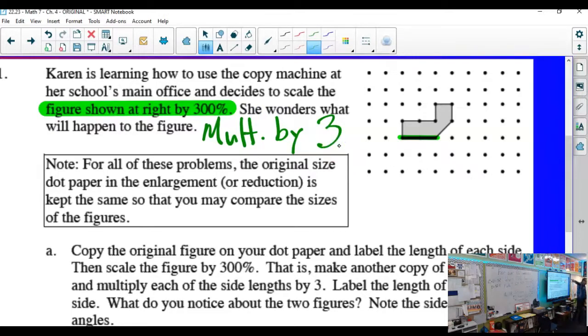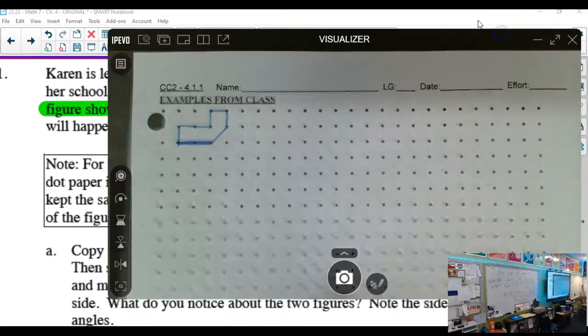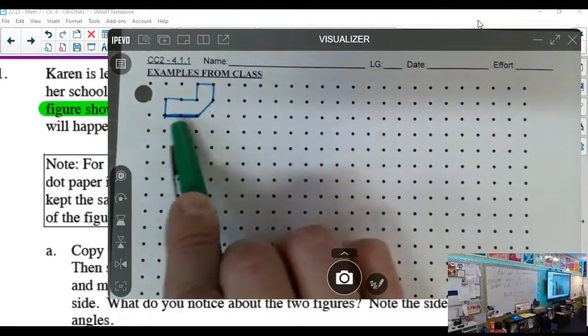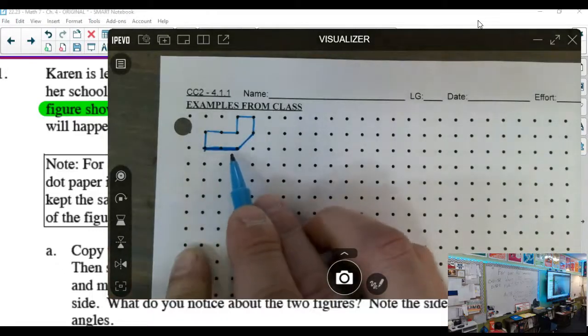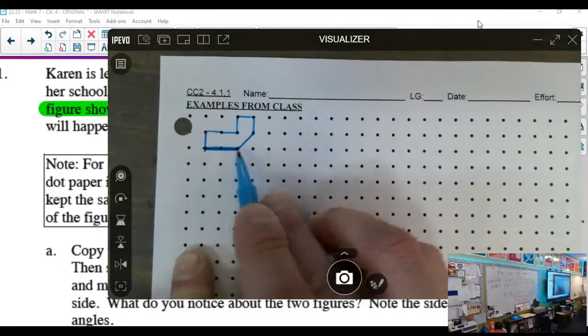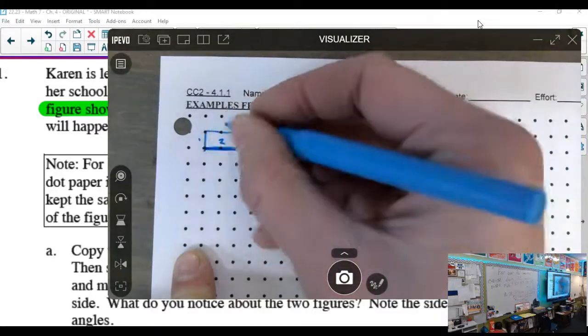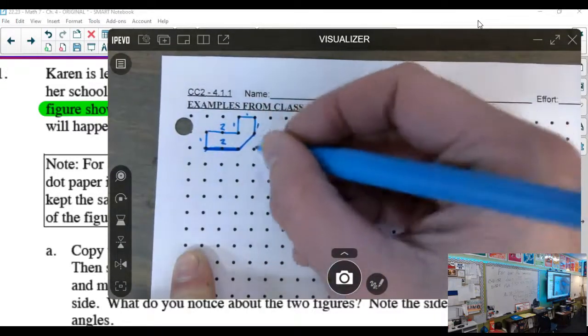Because 300%, what's percent mean? Out of a hundred. So when simplified, that's three. So our new shape is going to be three times the original shape. So that highlighted edge that we had, how long was that initially? It is three dots. But how many lengths is it? It's two. This is one. This is two.